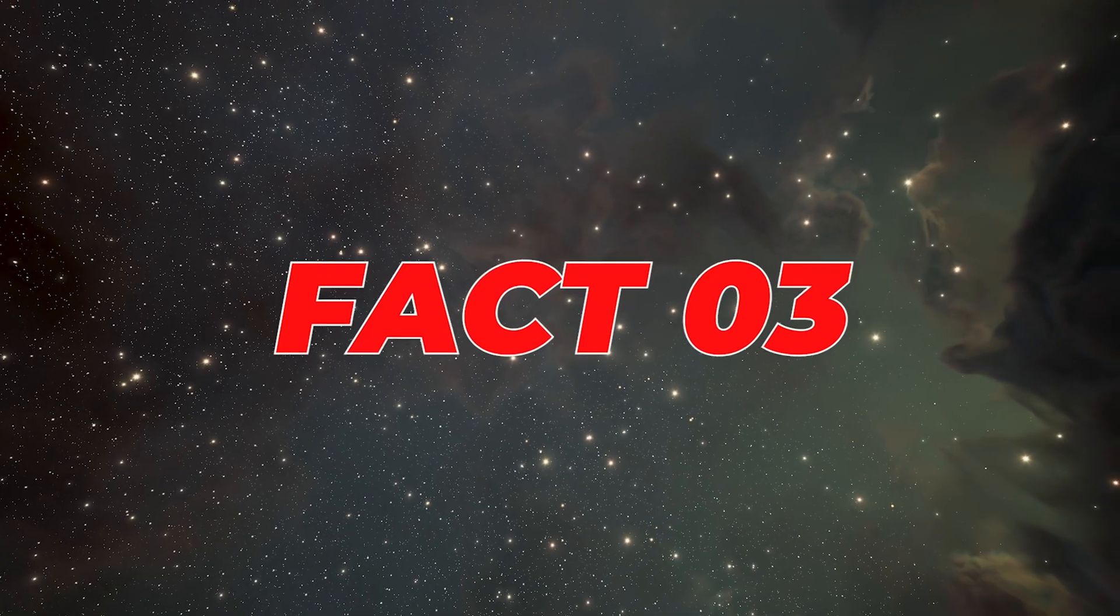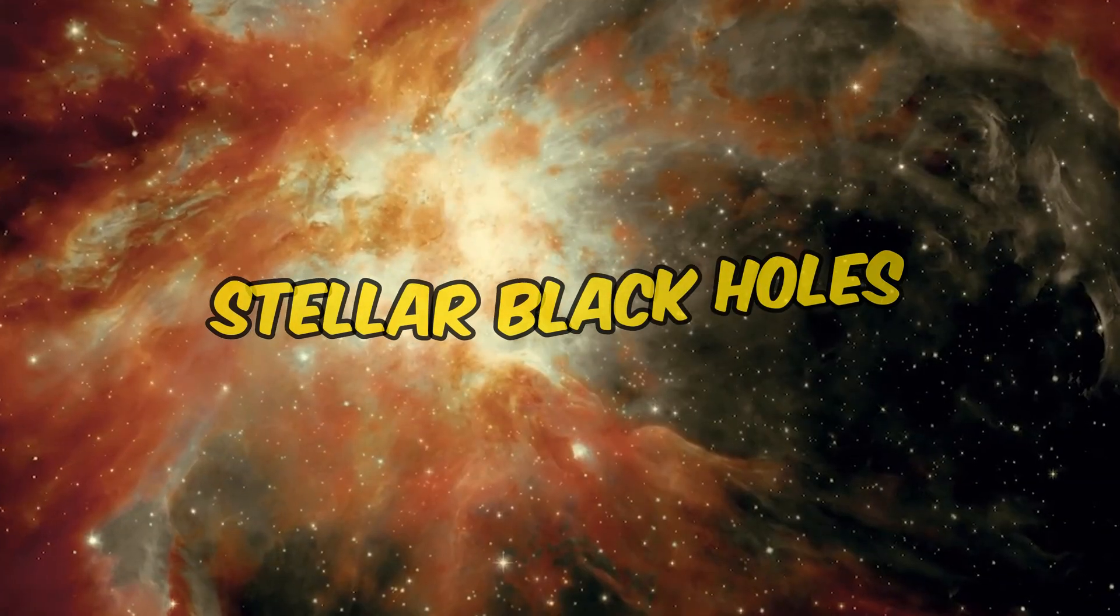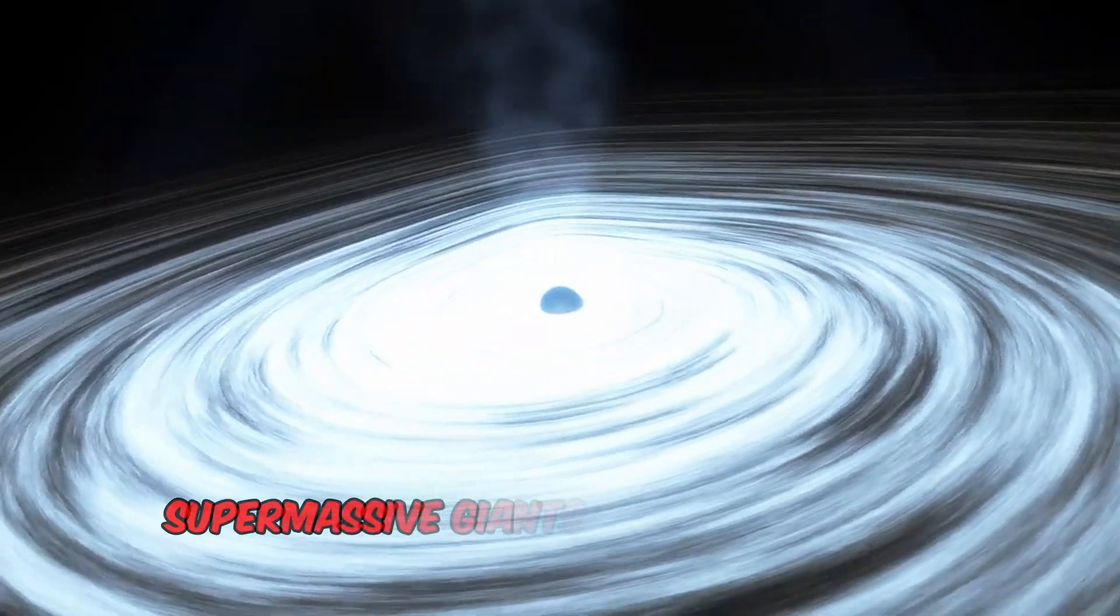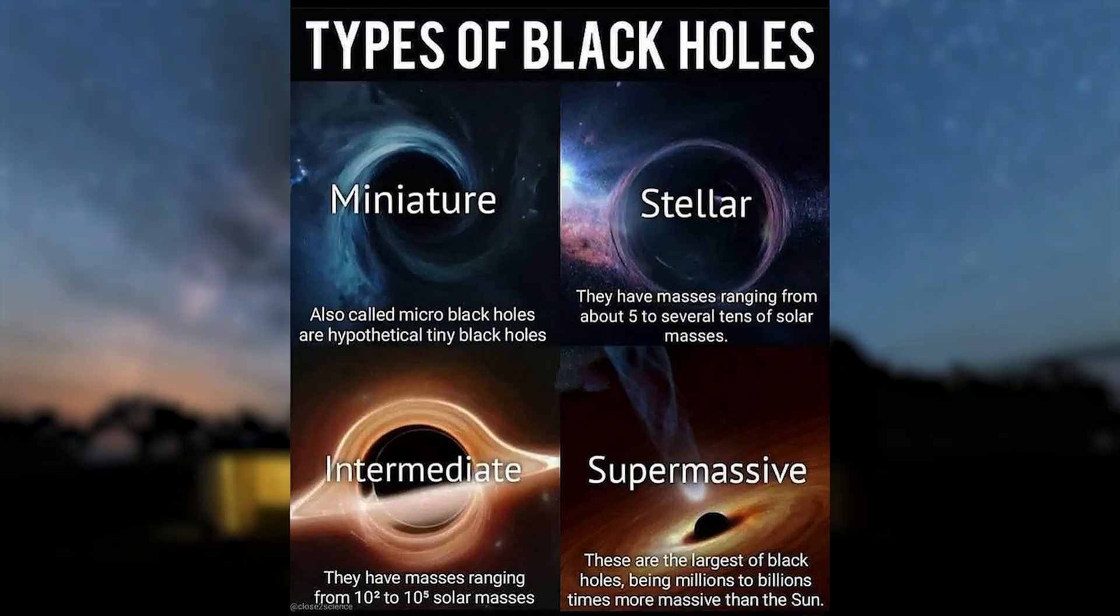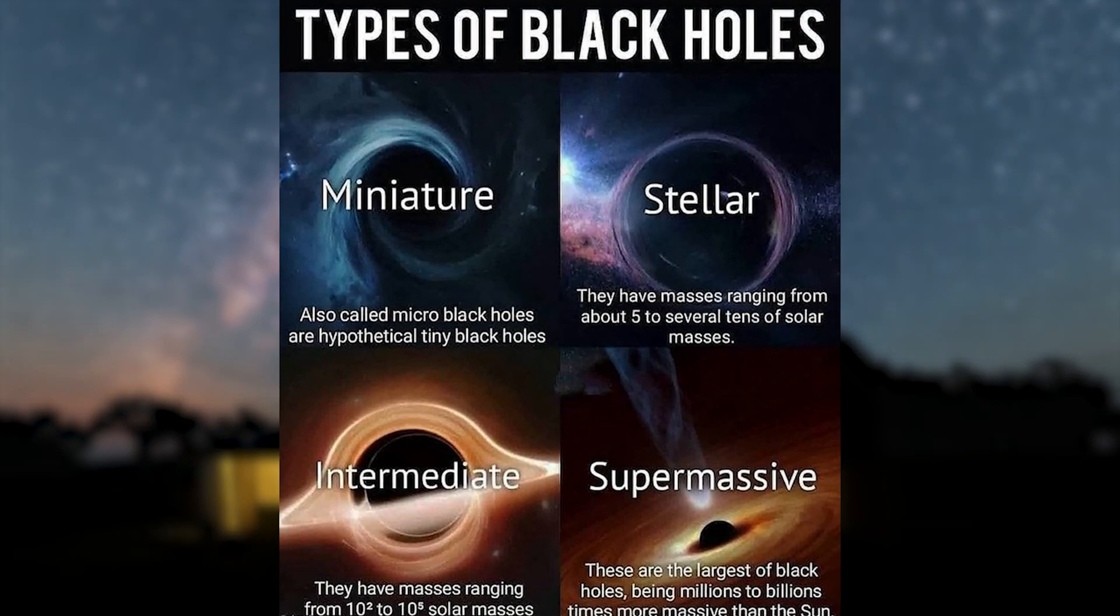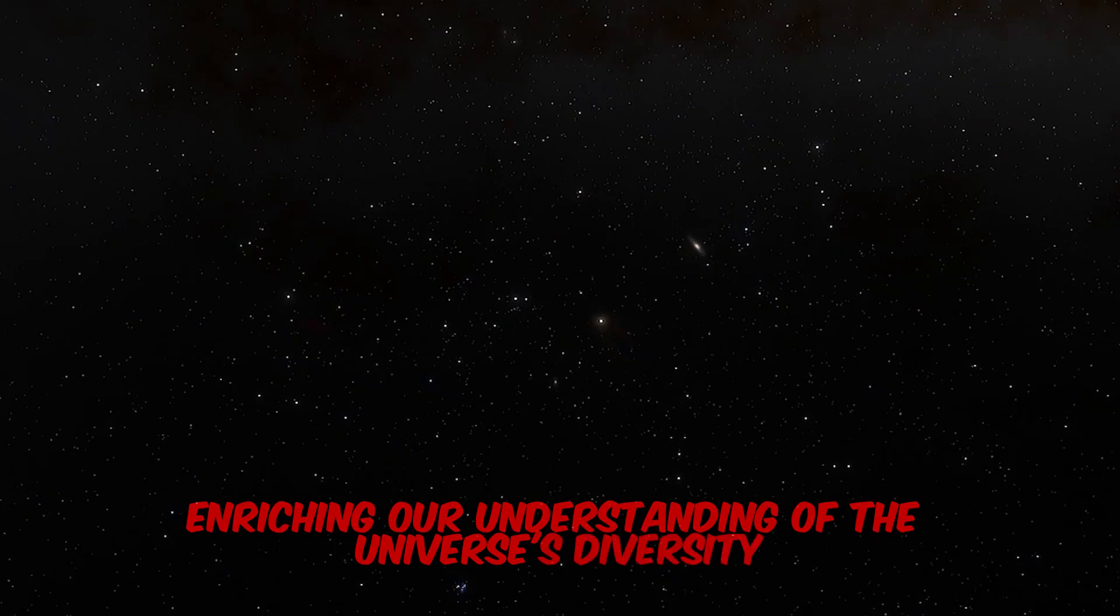Fact number 3. Black holes come in various sizes and types, from stellar black holes formed by collapsing stars to supermassive giants at the hearts of galaxies. Each type offers a glimpse into different cosmic processes and events, enriching our understanding of the universe's diversity.